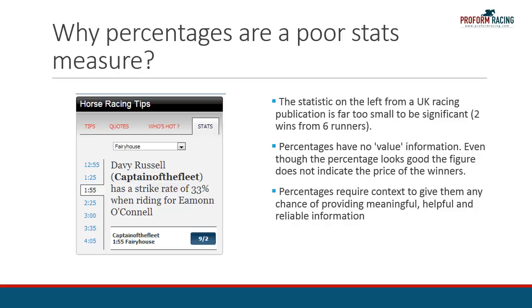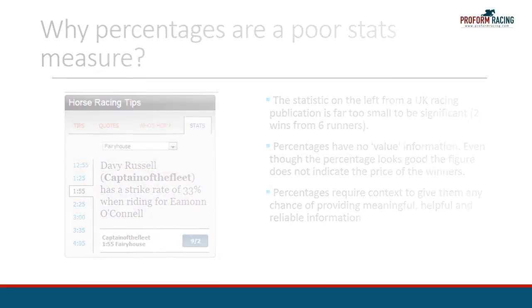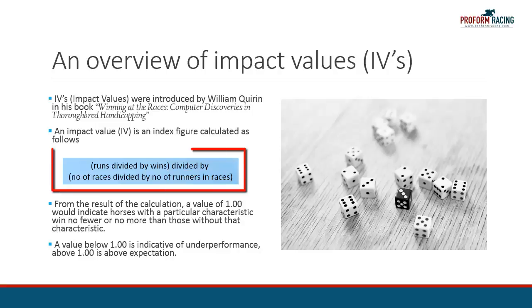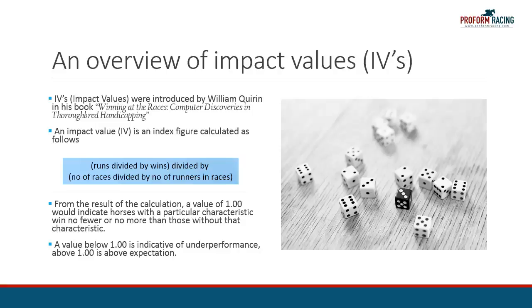Let me outline one statistical measure called impact values that is more preferable than percentages. Impact values were first introduced in 1974 by an American called Fred Davis, applied to horse racing by William Curran in the book listed on the slide. An impact value is an index calculated using a specific formula. A value of 1 would indicate horses with a particular characteristic win no fewer or no more than those without that characteristic. A value below 1 is indicative of underperformance, and a value greater than 1 suggests a performance above expectation.